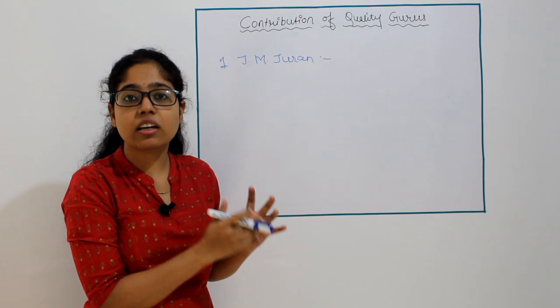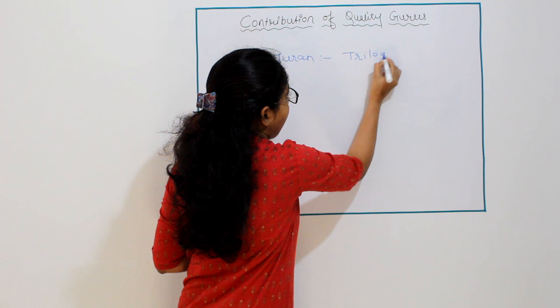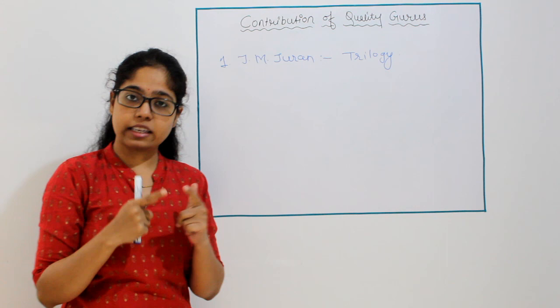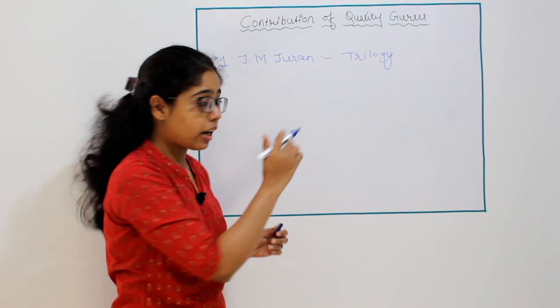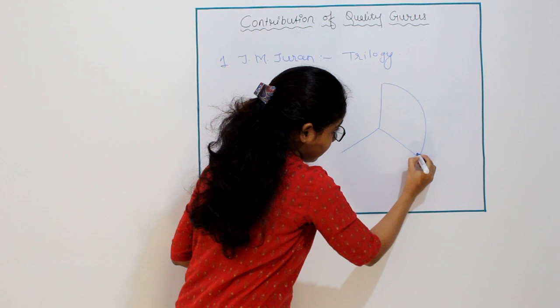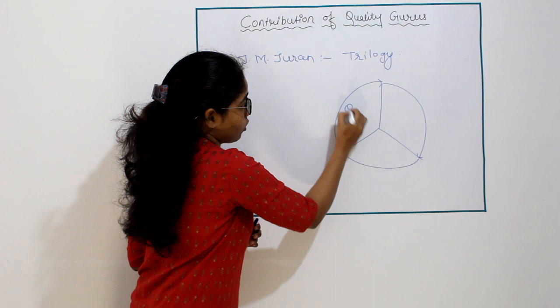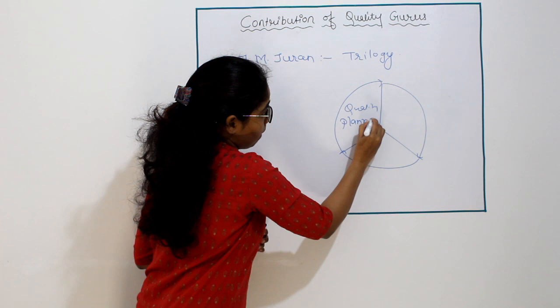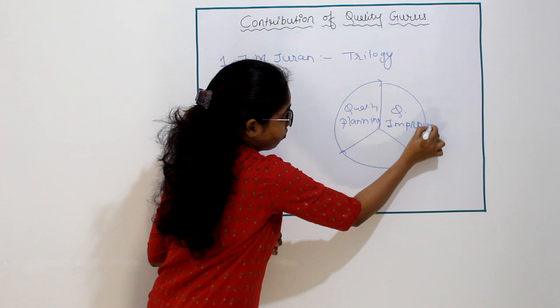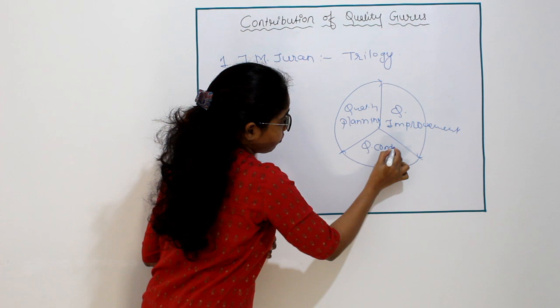He has given the Juran Trilogy. Under that, he explained three things: first is quality planning, second is quality improvement, and last is quality control. The Juran Trilogy can be represented as a cycle — first quality planning, next quality improvement, and last quality control.